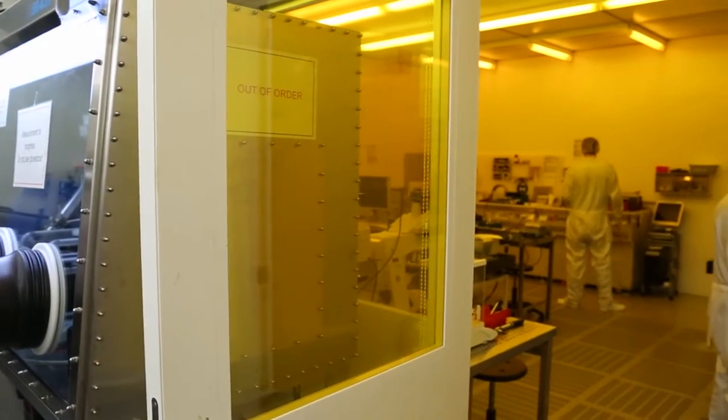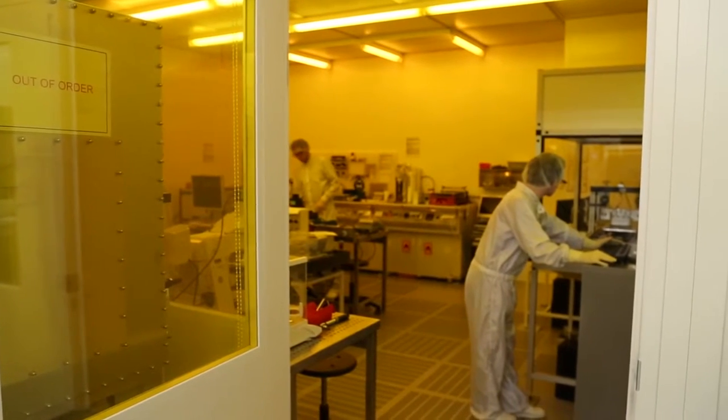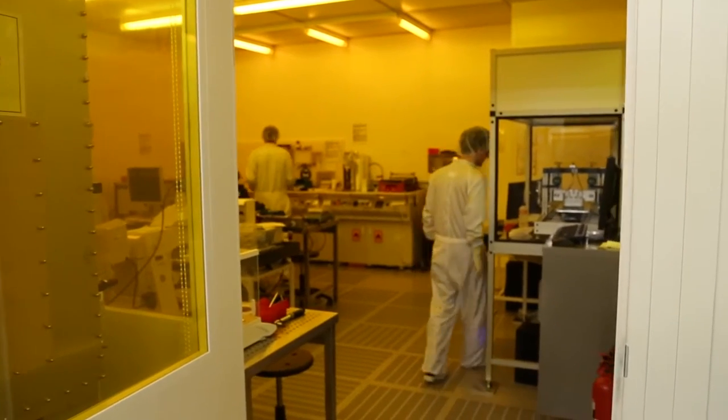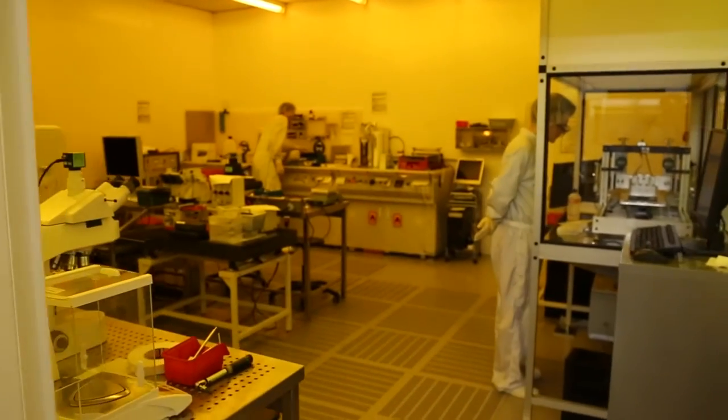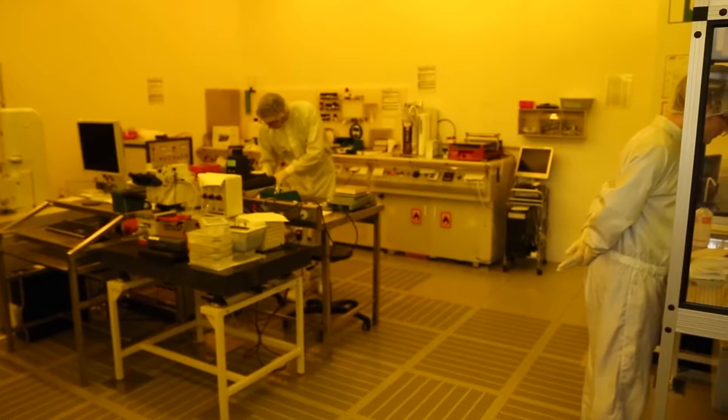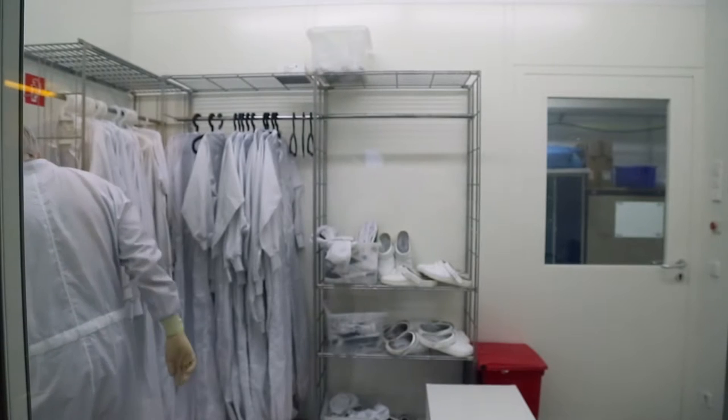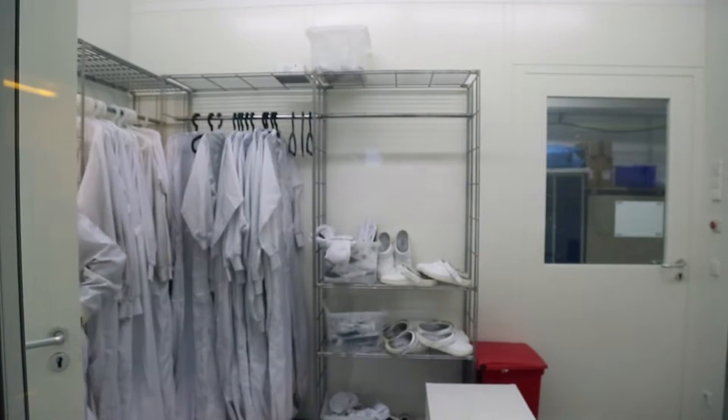For research purposes at the Light Technology Institute, organic light-emitting diodes and solar cells are manufactured from different components. Because the layers that are used are very thin, they are sensitive to contamination. Therefore, production takes place in a clean room which is sealed off from the outside world and may only be entered through an airlock and with protective clothing.